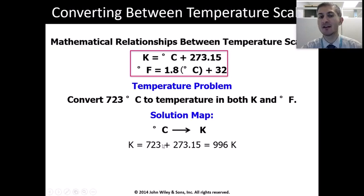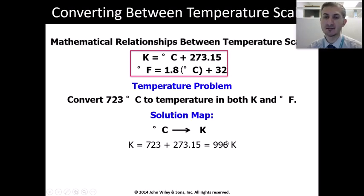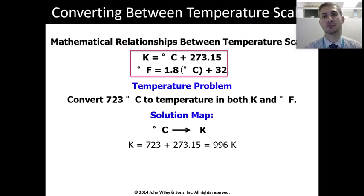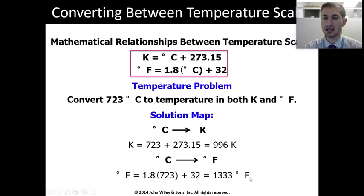The reason we drop the decimal: when doing addition, the rule is to use the fewest decimal places. 273.15 has two decimal places and 723 has none, so the answer has no decimal places — 996 K. Some authors prefer the more accurate conversion; sometimes it is skipped. To convert 723 degrees Celsius to degrees Fahrenheit, plug into the equation and calculate the result with your calculator.